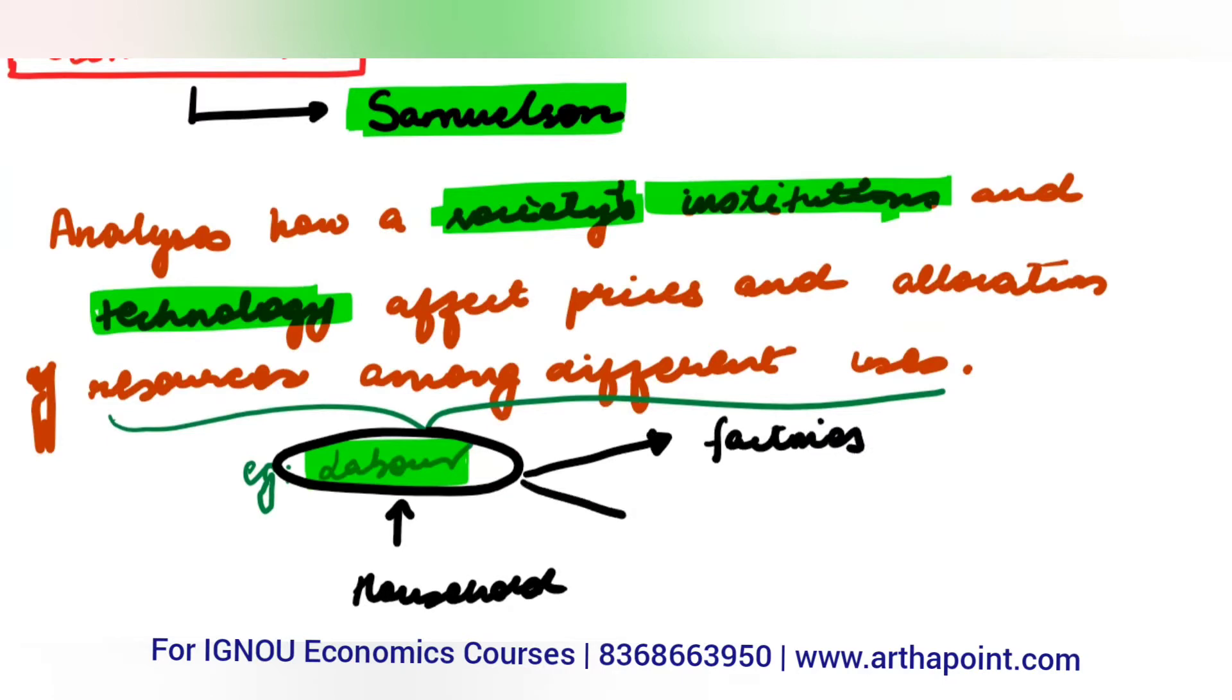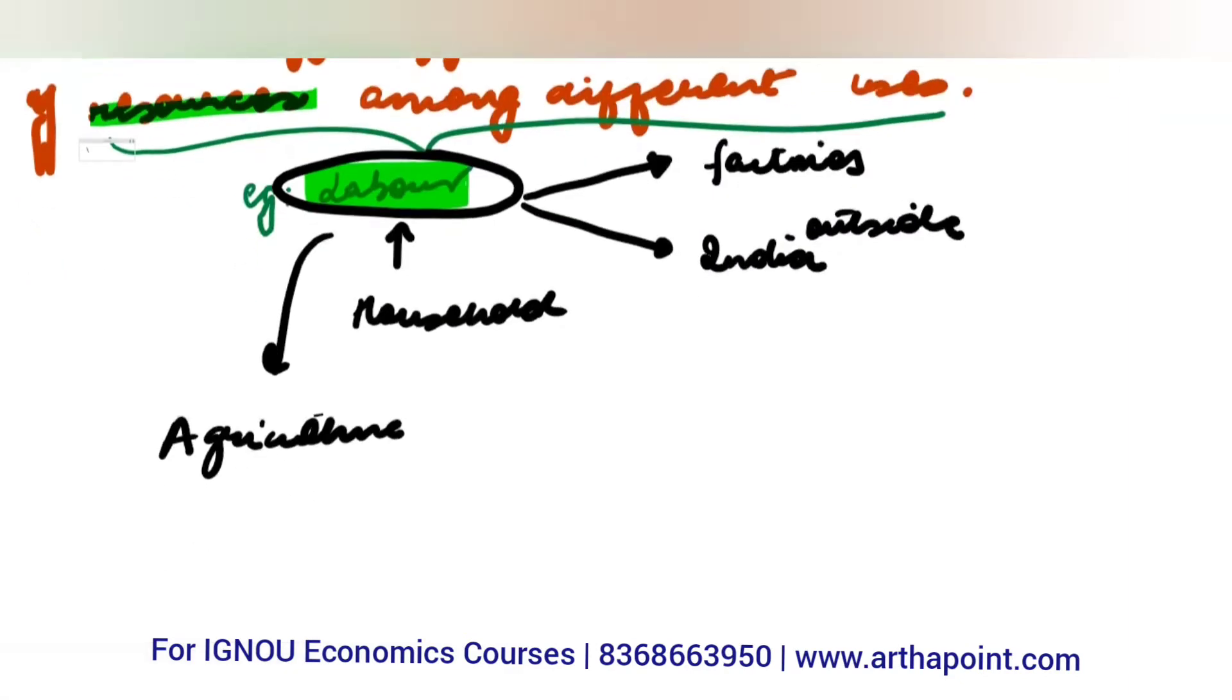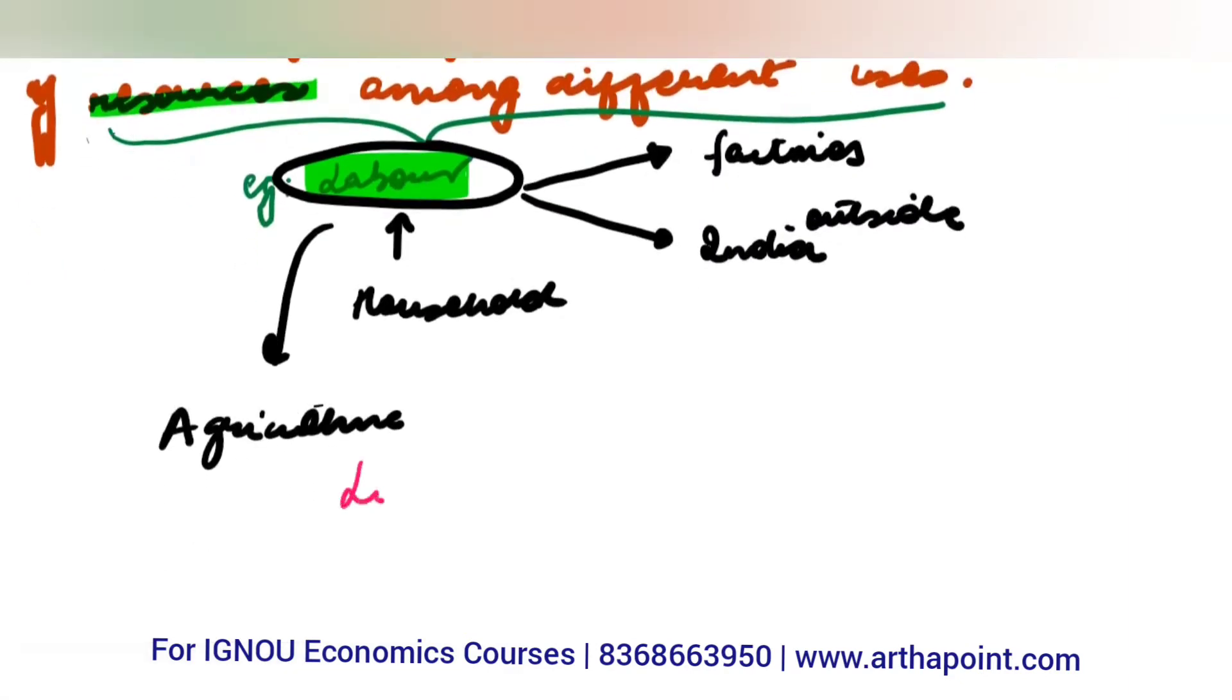How much of this labor will go into factories, how much will work outside India, how much the agricultural sector will use - this is resource allocation. Labor is just one resource; there's also land and capital.